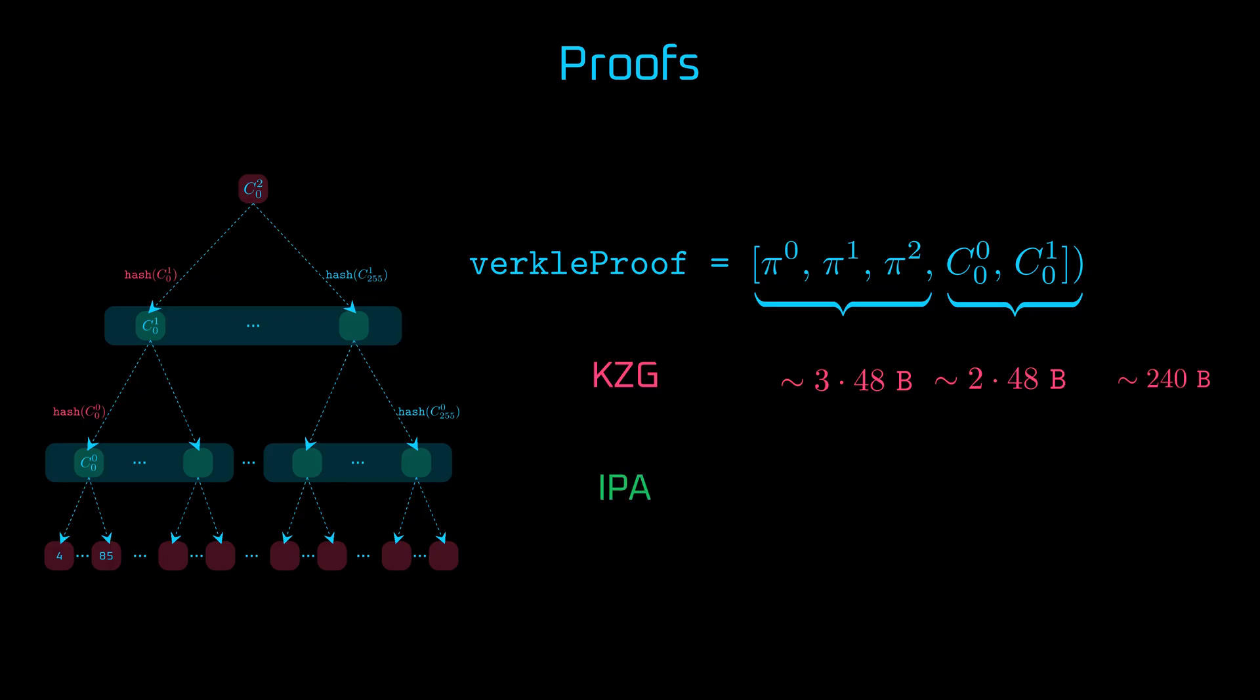For IPA, the commitments are up to almost 32 bytes each. And the opening proofs consist of multiple elliptic curve points. For 256 vector elements, we'd need 16 curve points, so up to almost 512 bytes per opening proof. Opening proofs are clearly the biggest in size. Three of them are around 1.5 kilobytes. So the verkle proof in total weights around 1.6 kilobytes. That is much bigger compared to the KZG setup, but with a tradeoff of trusted setup assumption and pairing-based verification, which brings extra complexity.